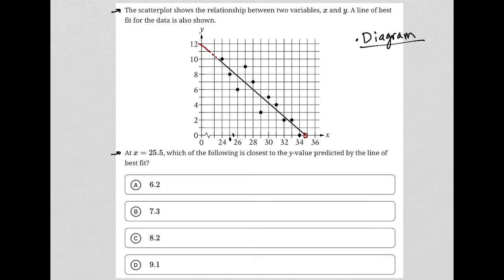25.5 would be right here. Which of the following is closest to the y-value predicted by the line of best fit? Okay, so that just means if I were to go up from 25.5 up to this line of best fit in as straight of a line as I possibly can, which is not going to be perfect but should be okay.